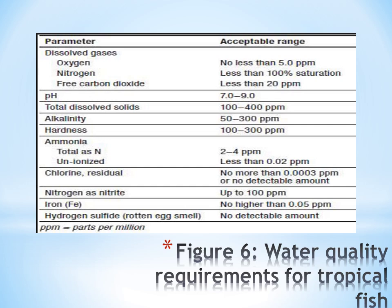Figure 6 here shows the water quality requirements for tropical fish. You can see the parameters and the acceptable ranges. For dissolved gases, oxygen must not be less than 5 parts per million. The pH — that is the level of acidity or alkalinity of the water — should be between 7 and 9. Total dissolved solids, alkalinity, ammonia, chlorine — all these have stated and required levels which should be maintained to ensure optimum production.